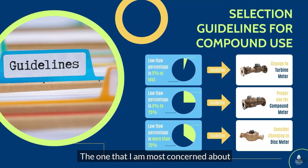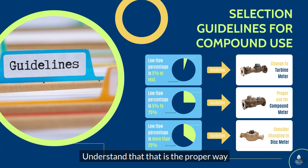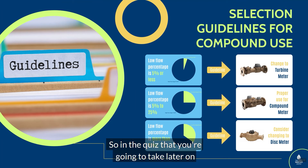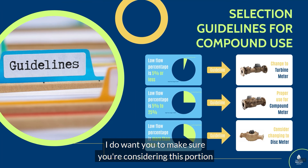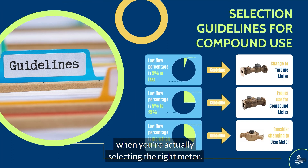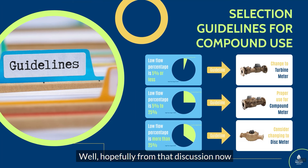The one I am most concerned about is that range between 5% and 25%. Understand that that is the proper way to use a compound meter. So in the quiz that you're going to take later on in this course, I do want you to make sure you're considering this portion when you're actually selecting the right meter.